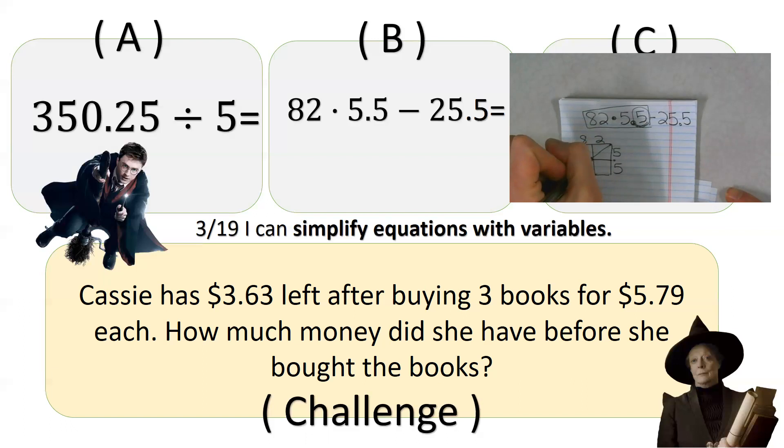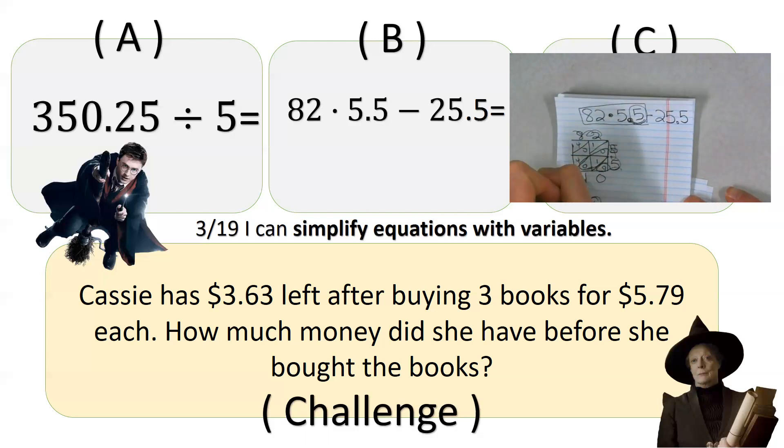So I make my box. I put my 82 up here. I put my 5.5 here. So there's a decimal. Remember, when you multiply by decimals, you just ignore the decimal until you get an answer. So now we fill in each box. This is 5 by 2, which is 10. This is 5 by 8, which is 40. This is 5 by 2, which is 10. And this is 5 by 8, which is 40. Now the answer falls down.